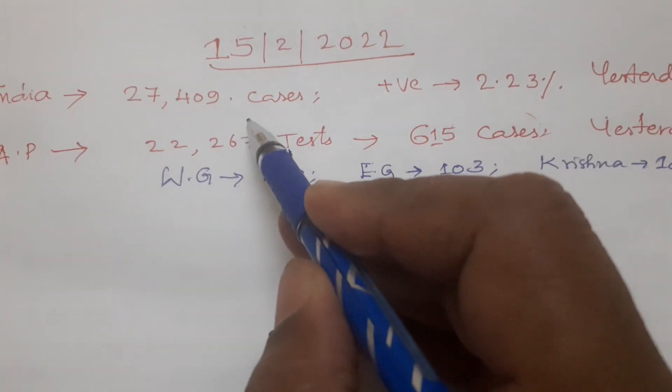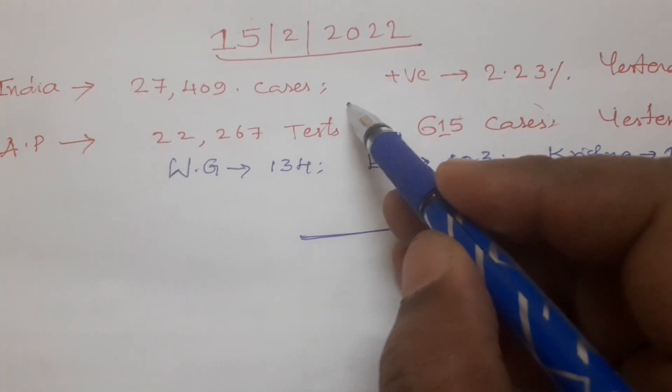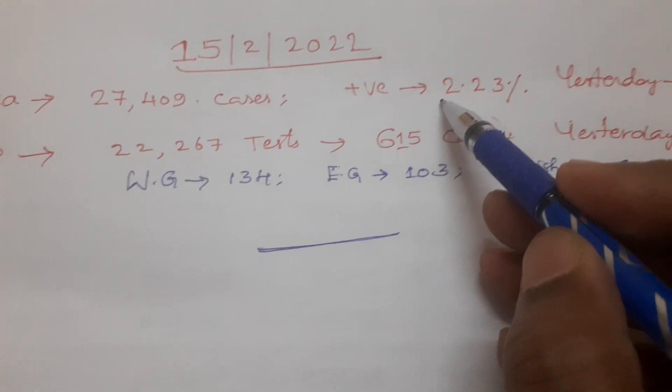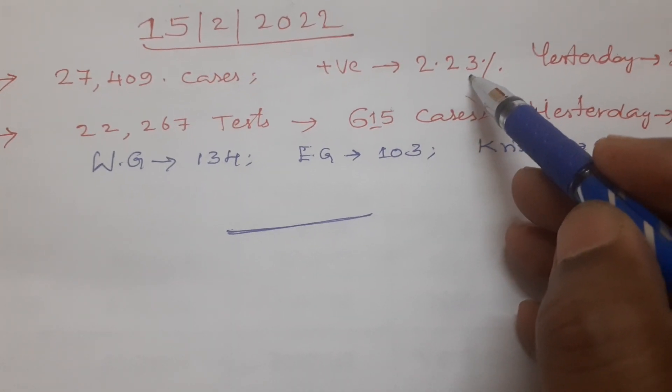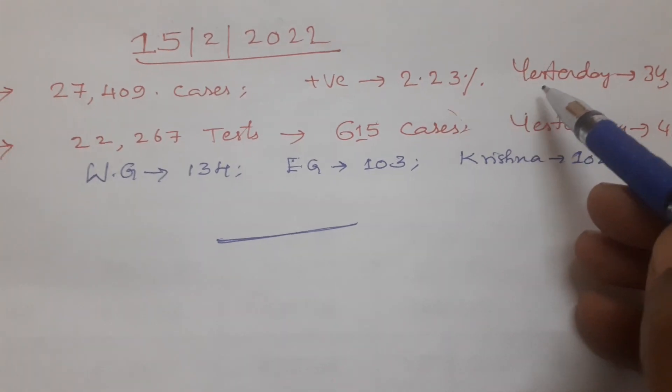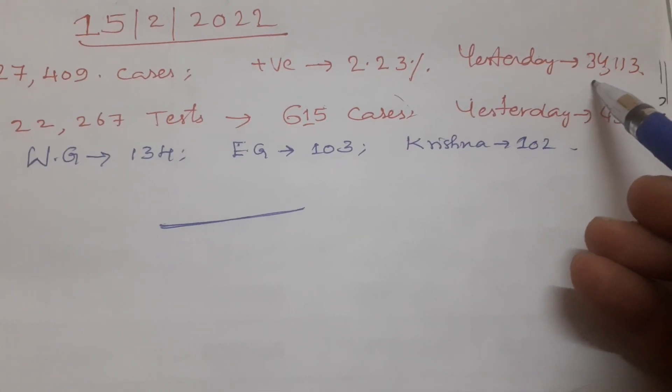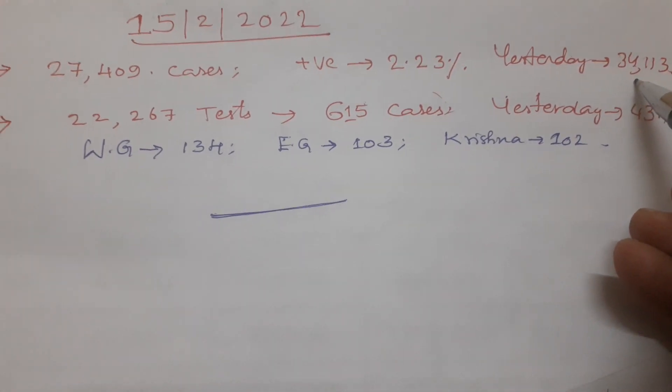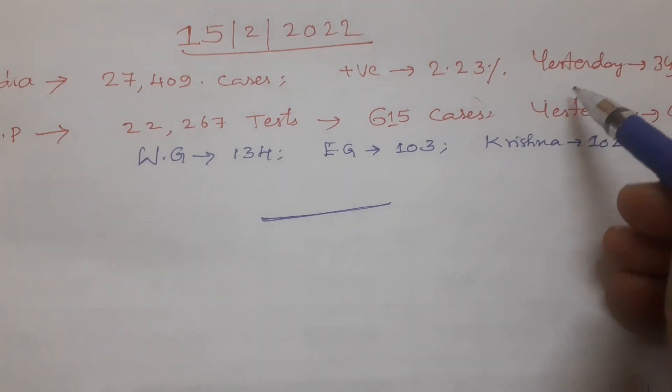India recorded 27,409 cases in the last 24 hours. The positivity rate has been recorded as 2.23%. Yesterday it was 34,113 cases. Cases are coming down nationwide.